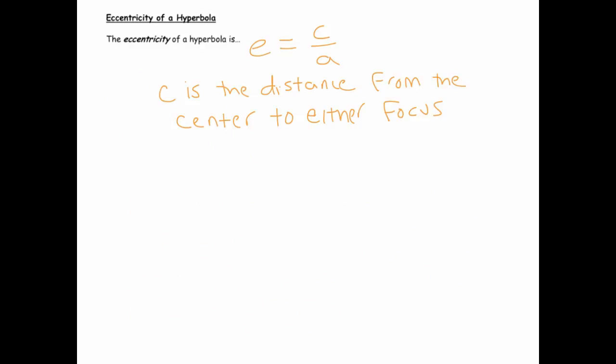So as with an ellipse, we can talk about the eccentricity of a hyperbola. And the eccentricity has the same definition, it's c over a, where c is the distance from the center to either focus, and a is again the semi-transverse axis, or in other words the distance from the center of the hyperbola to one of the vertices.